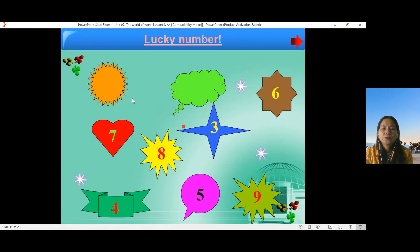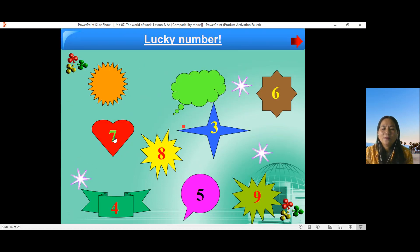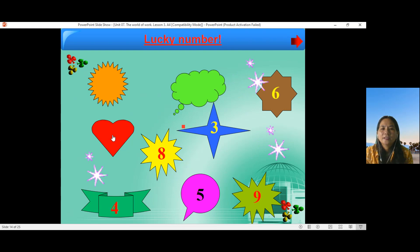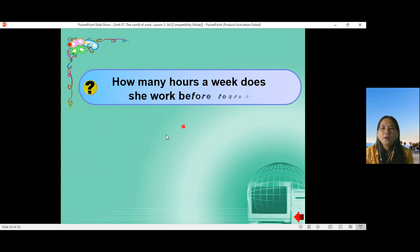Này, number two. Okay. Nào, number seven. I have, how many hours a week does she work before the test? Forty? Ah, okay, forty-five. Very good.